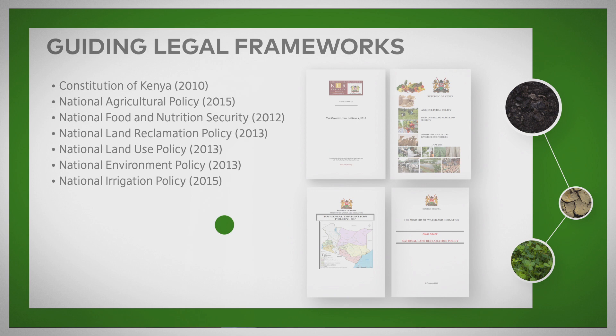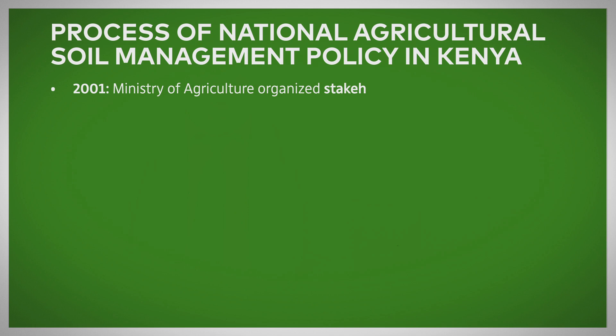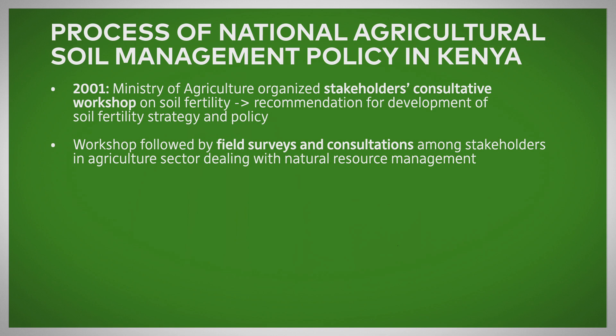The process of the development of the National Agricultural Soil Management Policy started in 2001, when stakeholders came together to see what the issues were. At that time, they expressed the need for a strategy to deal with issues of soil management. In 2006, a draft paper on policy was put in place to address the issues of soil fertility.